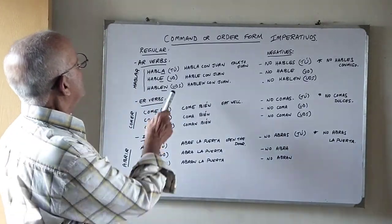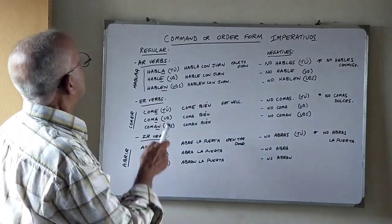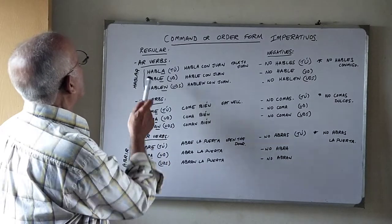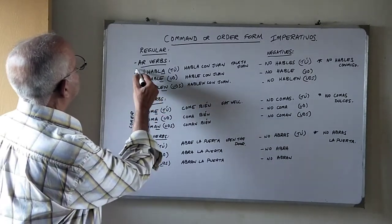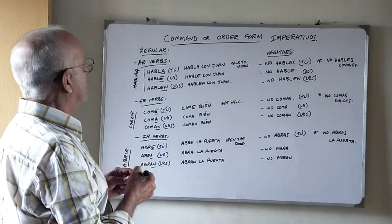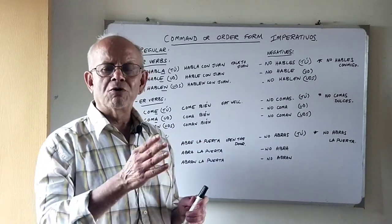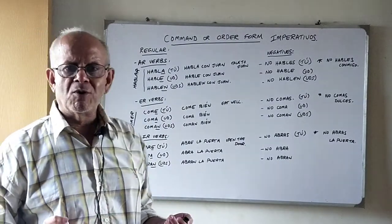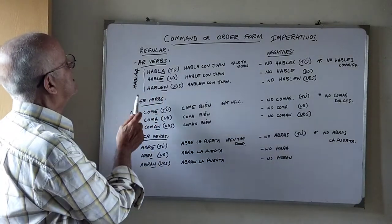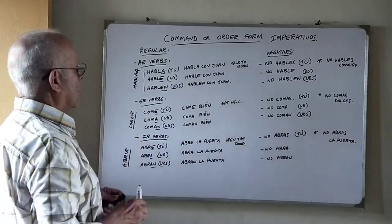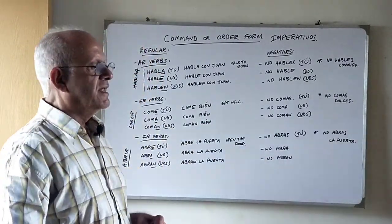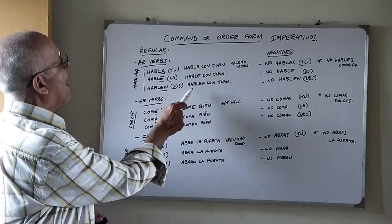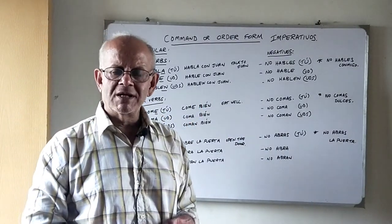For the AR verbs, an order in the tú form: we just remove the R from the verb. So HABLAR becomes HABLA. For example, if I tell someone 'talk to Juan,' I say HABLA CON JUAN. In the respectful usted form, we replace the A with an E, so it becomes HABLE CON JUAN. And if giving the order to more than one person, we add an N to the usted form, making it HABLEN CON JUAN.